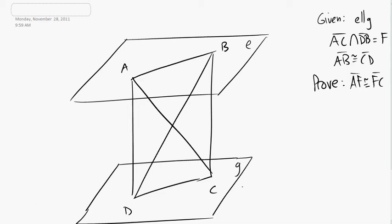We're given here that these two planes are parallel. We're given that AC and DB intersected at F. Why are they telling us that they intersect at F?